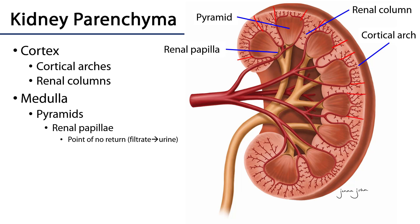And then there are the renal columns. The renal columns are the spaces that interleave between the cortical arches and the lateral portions of the medulla. This cortex is where we'll find the renal corpuscles as well as proximal and distal convoluted tubules of the nephrons.